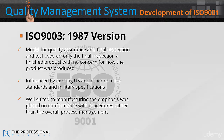ISO 9001 1987 was also influenced by existing United States and other defence standards and military specifications, and so was well suited to manufacturing as the emphasis tended to be placed on conformance with procedures, rather than the overall process management which was the likely intent.